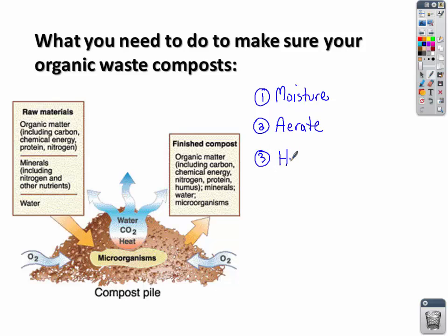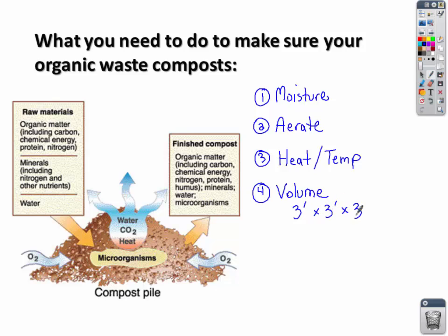The third requirement is just the right amount of heat and temperature. You need to maintain the temperature — not too hot, not too cold. Starting a system out in the sun in springtime is a good opportunity for organisms to get some heat. The fourth thing is volume — the general rule of thumb is that you want your compost pile to be about 3 feet by 3 feet by 3 feet. That will allow enough air into your system and provide enough insulation for the organisms to stay warm.